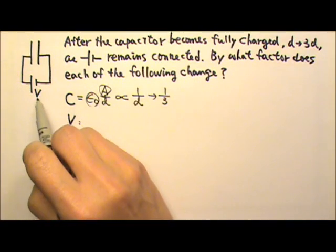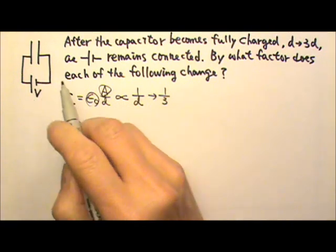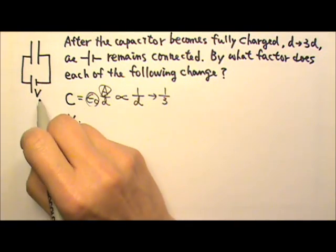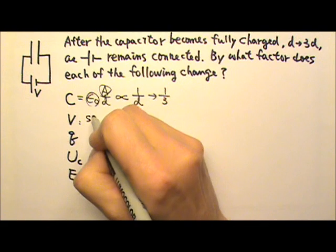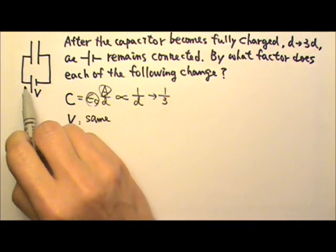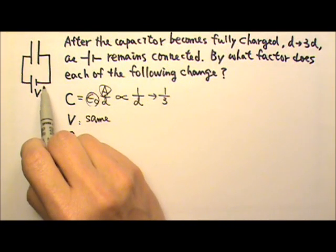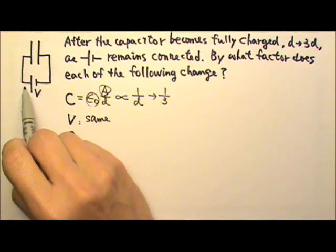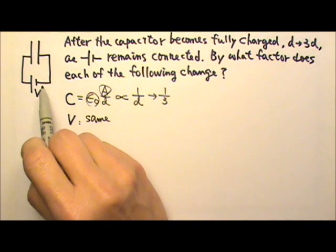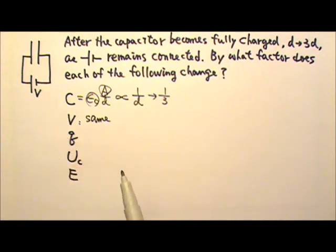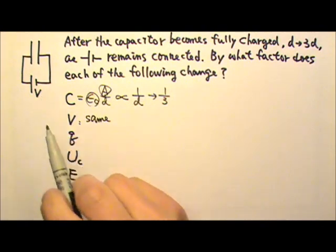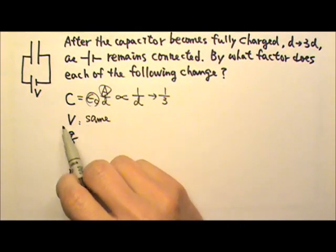The voltage, since the battery is staying, that means this battery is going to maintain the same voltage. A battery has a certain voltage. For example, a 9-volt battery keeps a 9-volt voltage difference across its two terminals. The positive terminal would have a 9-volt higher electric potential than its negative terminal. So if the battery stays there, it is going to maintain the same voltage.